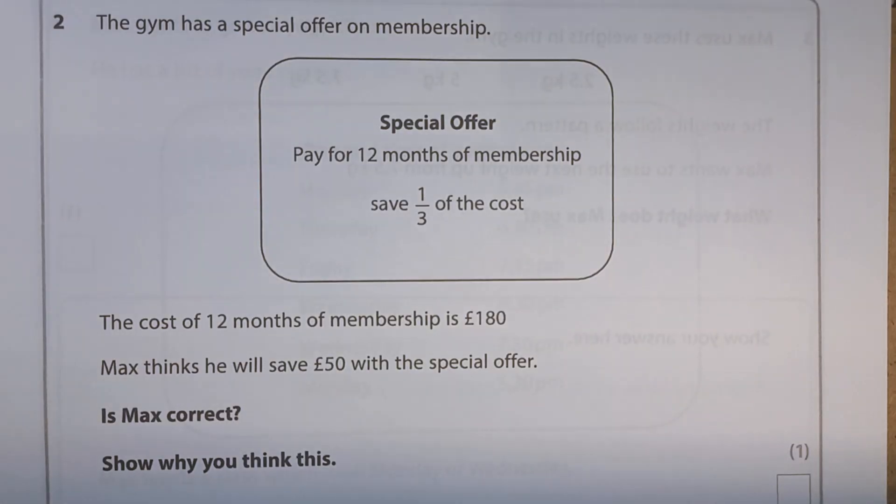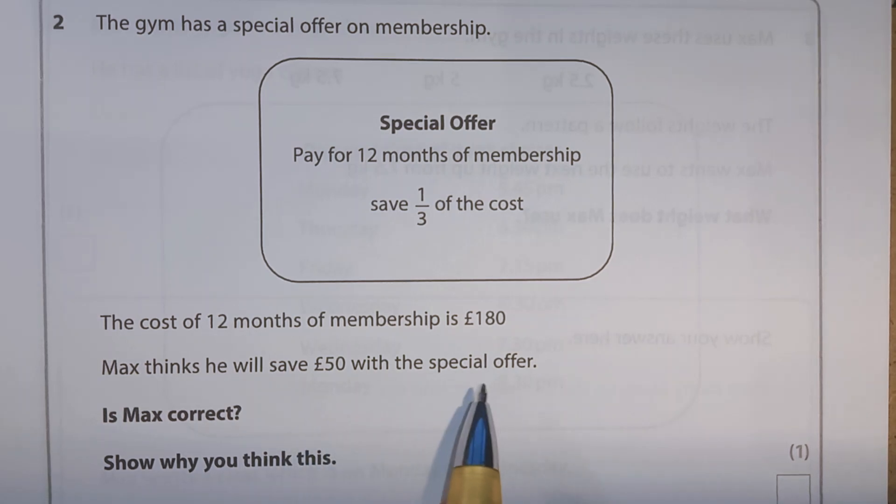Question 2, the gym has a special offer on membership. And there's our special offer. Pay for 12 months of membership, save one third of the cost. The cost of 12 months of membership is £180. Max thinks he will save £50 with a special offer. Is Max correct?